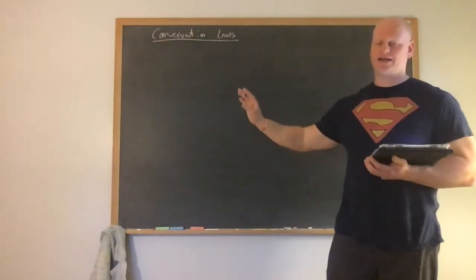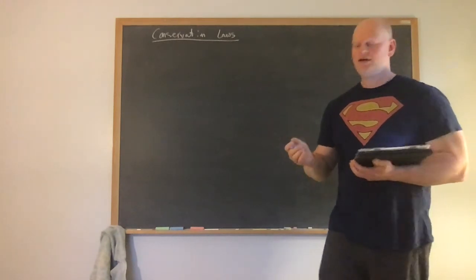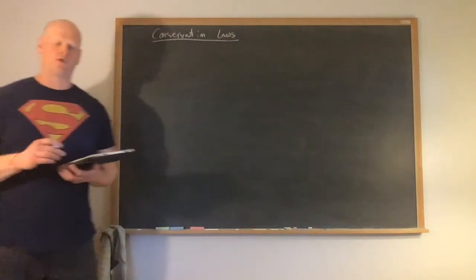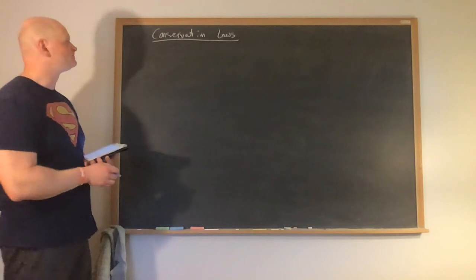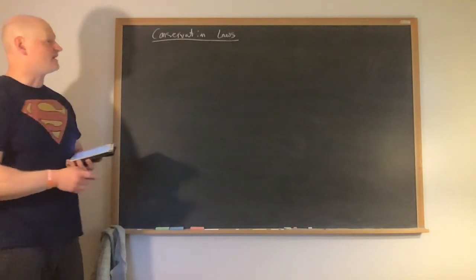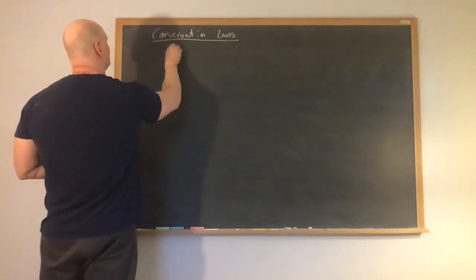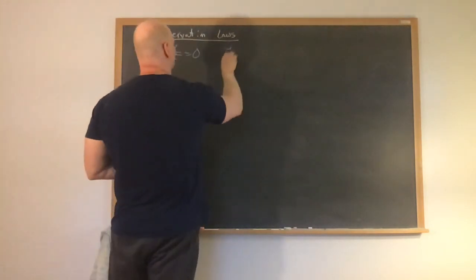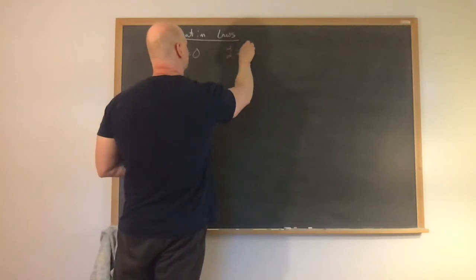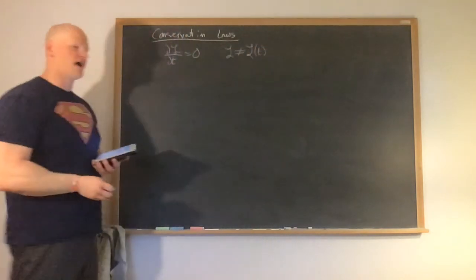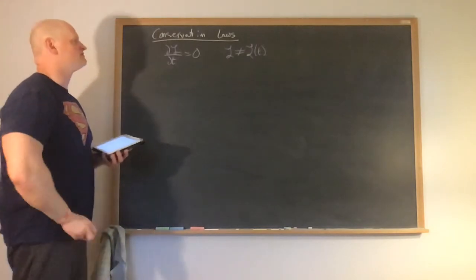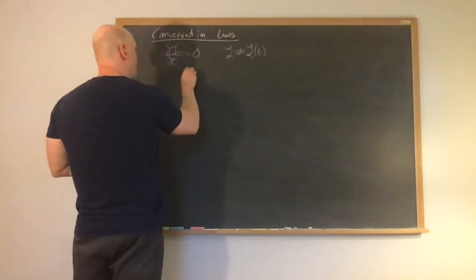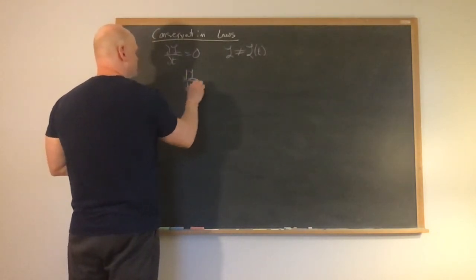So we want to see that a little bit here. We've already seen how it works, but we want to develop it just a little bit more and talk about where these things actually come from. The first one we're going to look at is what happens if our partial derivative of the Lagrangian with respect to time is equal to zero. So what that means is that our Lagrangian is not explicitly a function of time—time is embedded in the coordinates, but it's not explicitly a function of time. Let's look at the total derivative of the Lagrangian with respect to time.